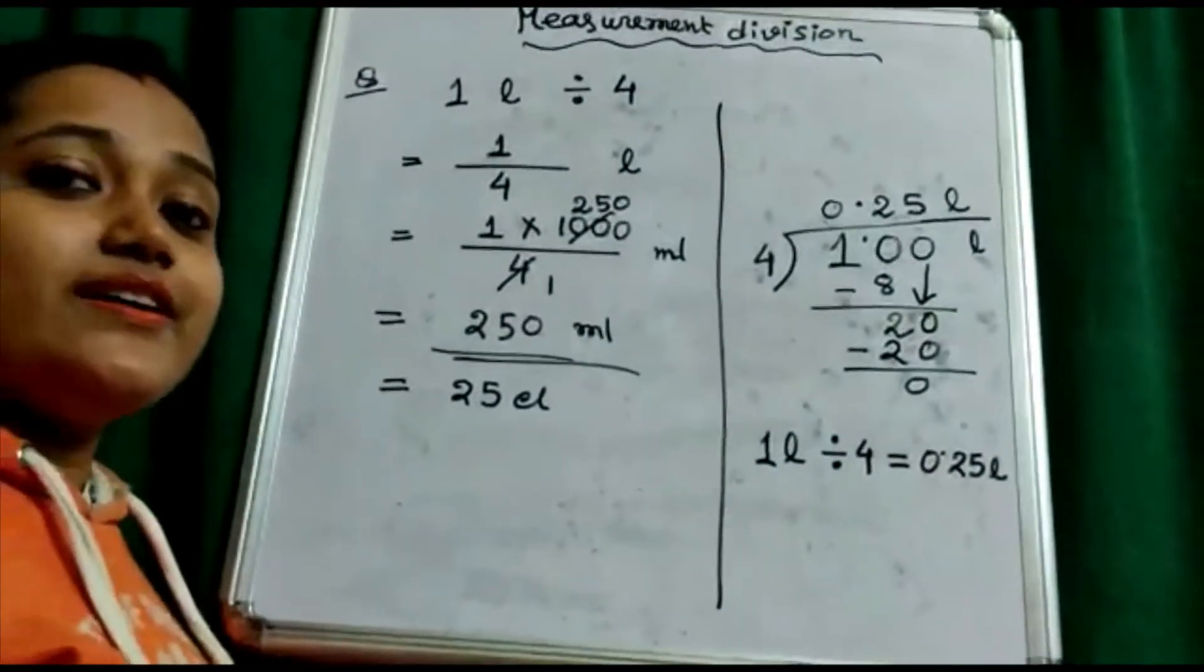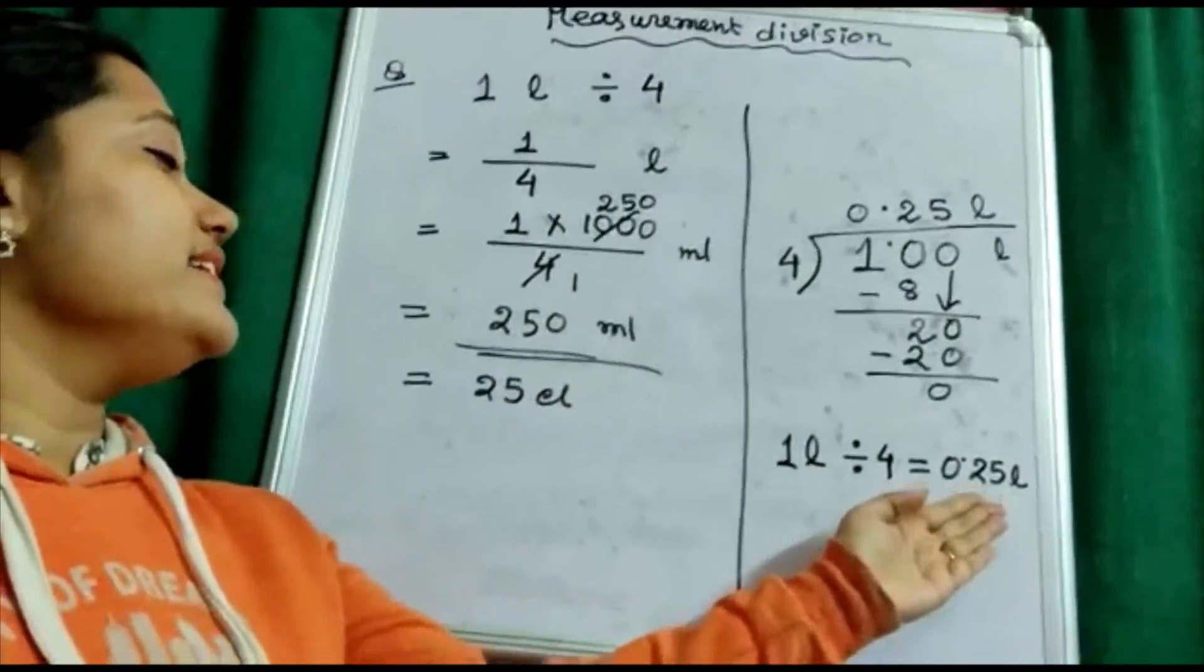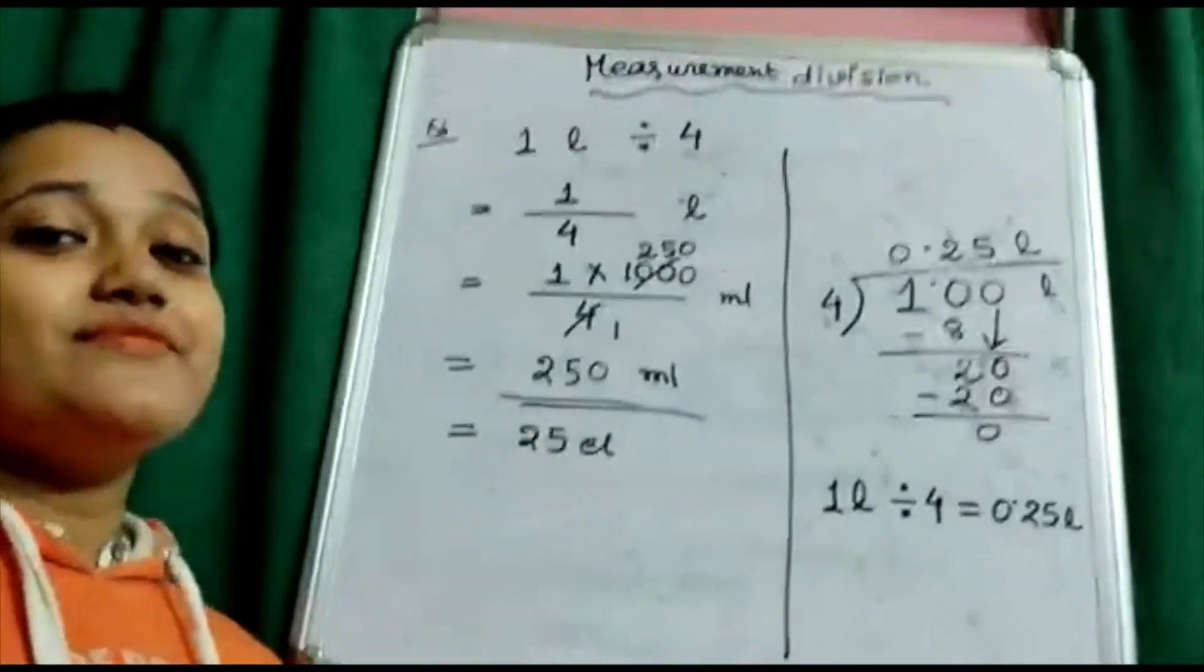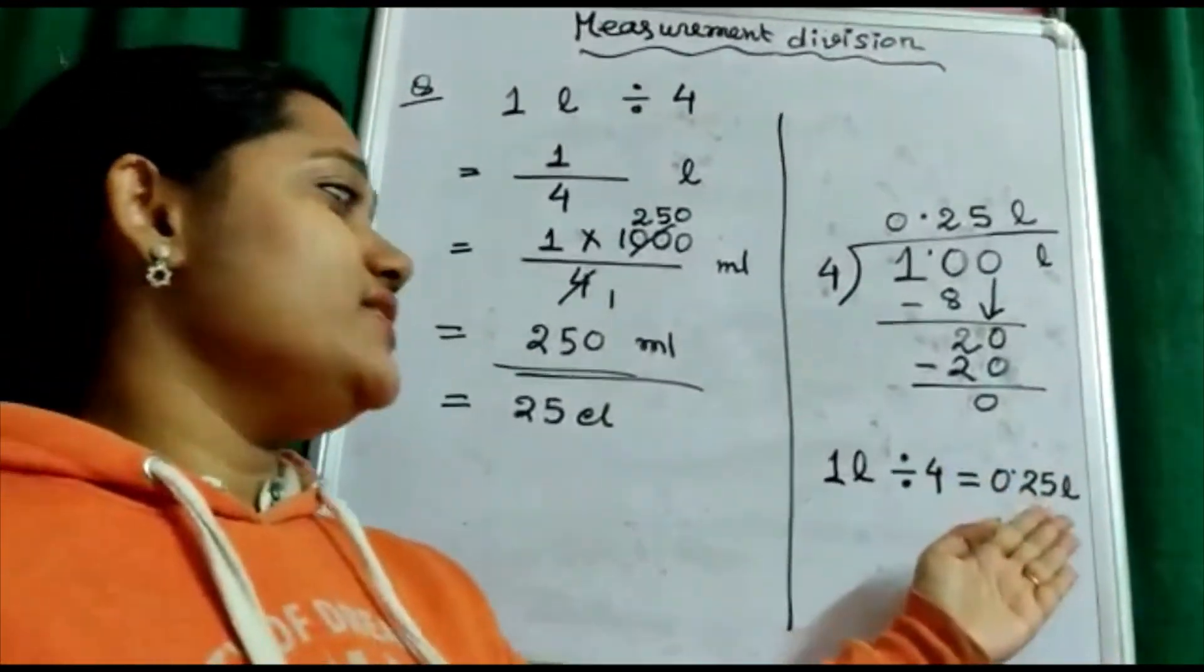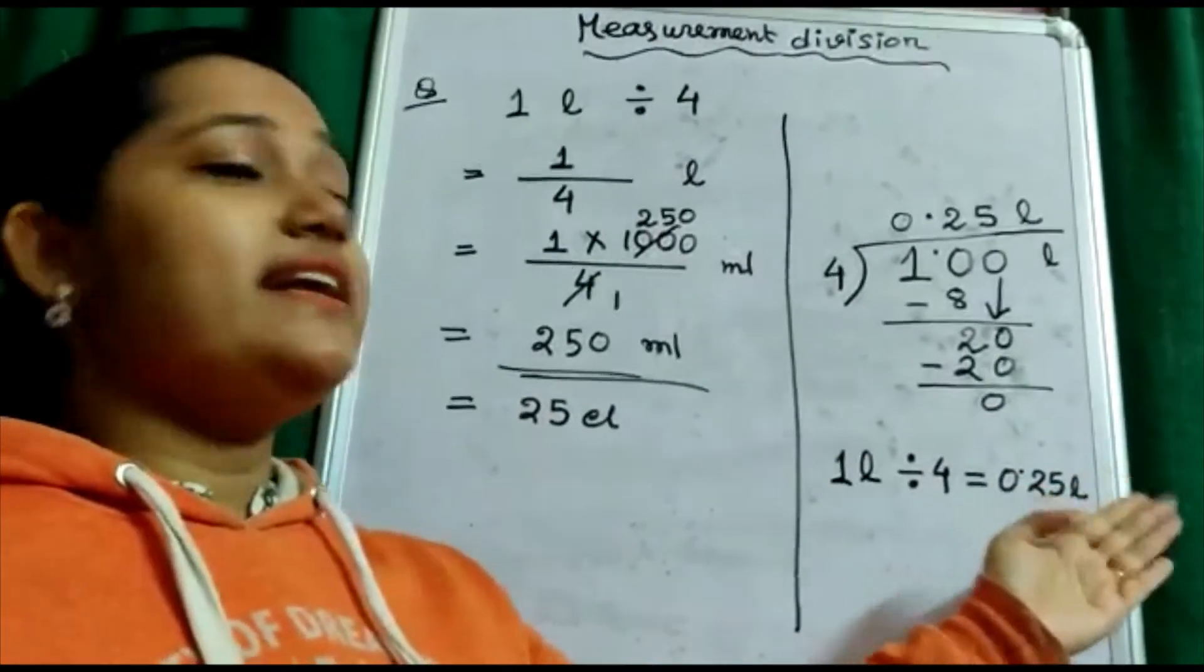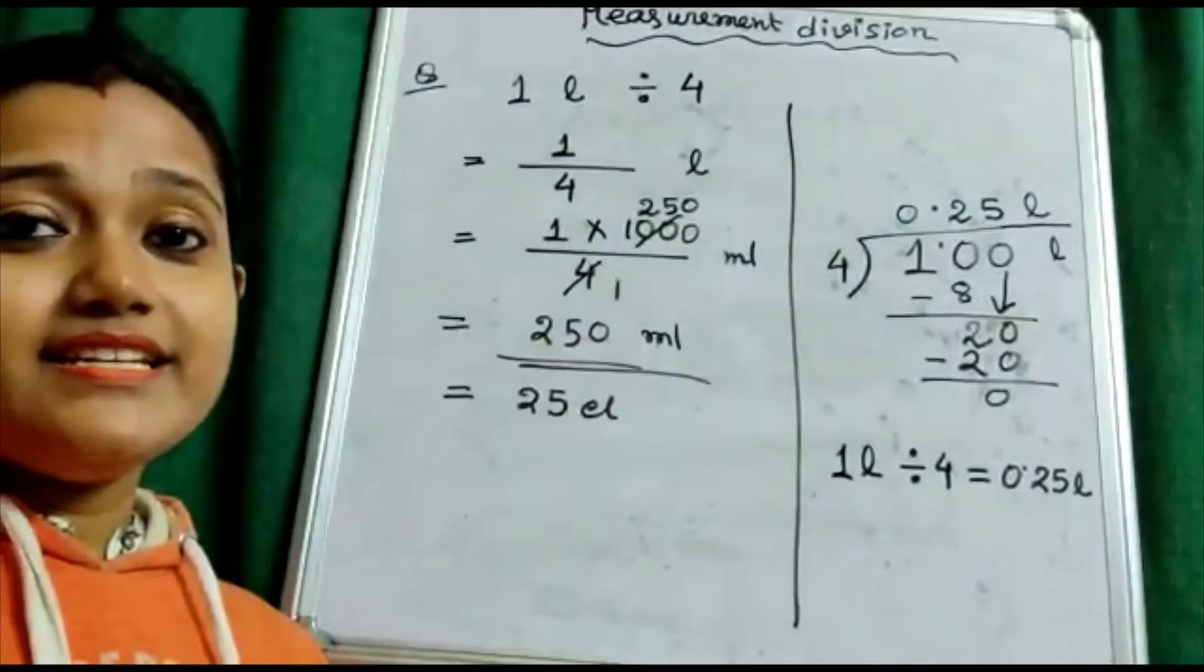One liter divided by four equals 0.25 liter. And you can check that 0.25 liter is nothing but 25 centiliter or 250 milliliter.